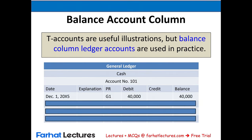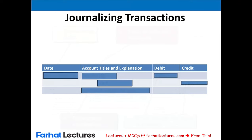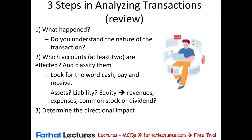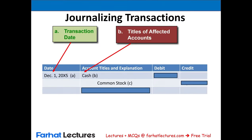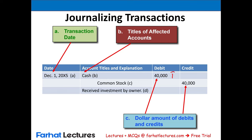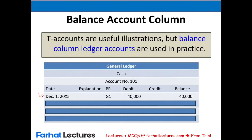Let's complete the general ledger. On December 1st, 20X5, in the first transaction, I debited cash and credited common stock, so cash went up by $40,000. I go to my general ledger for cash, put the same date, debit cash to increase it $40,000, and my balance in cash is now $40,000. I can add an explanation — the investor invested money.